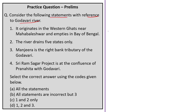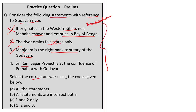Question 5: Consider the following statements with reference to the Godavari River. Statement 1 says it originates in the Western Ghats near Mahabaleshwar — wrong; it originates from Trimbakeshwar. Statement 2 says the river drains five states only — wrong; it drains six states. Statement 3 says Manjira is a right-bank tributary of Godavari — correct. Statement 4 says the Sriram Sagar Project is at the confluence of Pranahita with Godavari — wrong; it is the Kaleshwaram Dam at that confluence. Correct answer: Option B, only statement 3 is correct. This concludes today's news analysis and practice questions session.